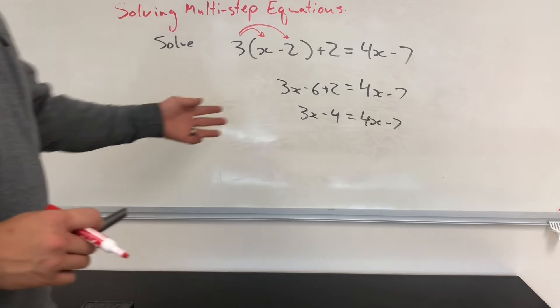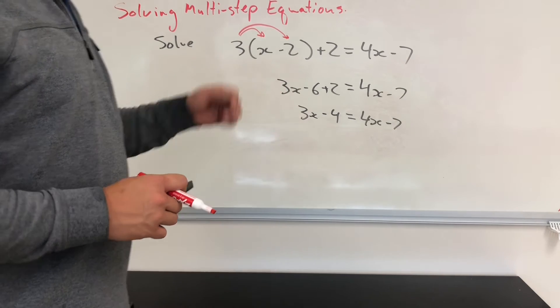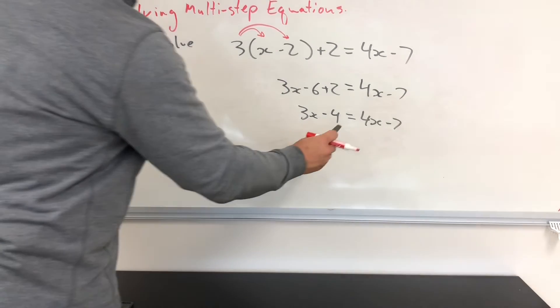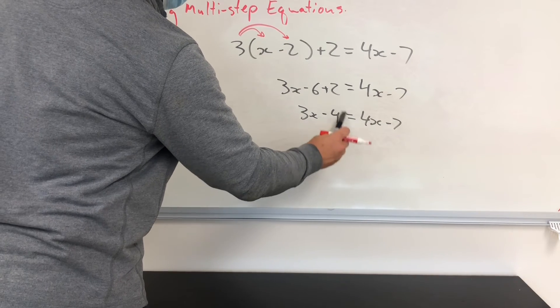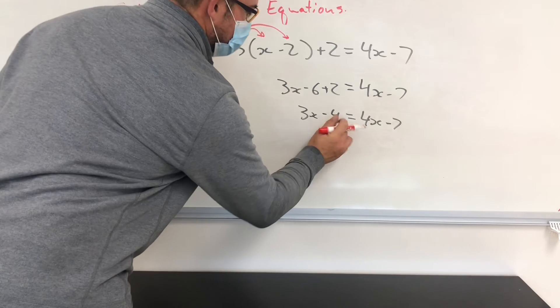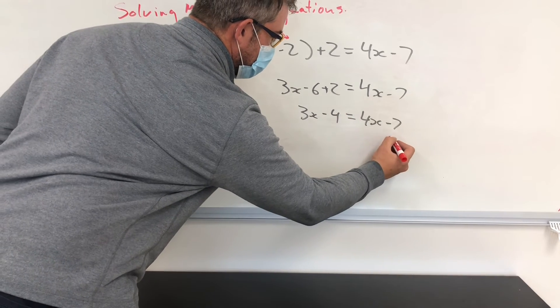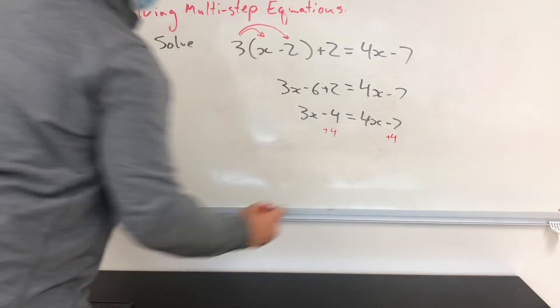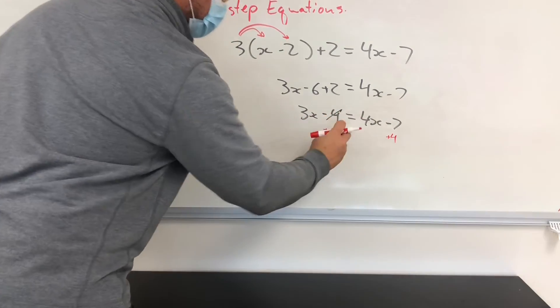Now I'm at that same step that I was one example ago. I just have to start moving terms. An easy way to think about moving terms is when you bring a term over to another side, you change its sign. So if I wanted to bring this 4 over to here, it would become a positive 4. And what I do to one side, I must do to the other. And that way, those two things cancel.